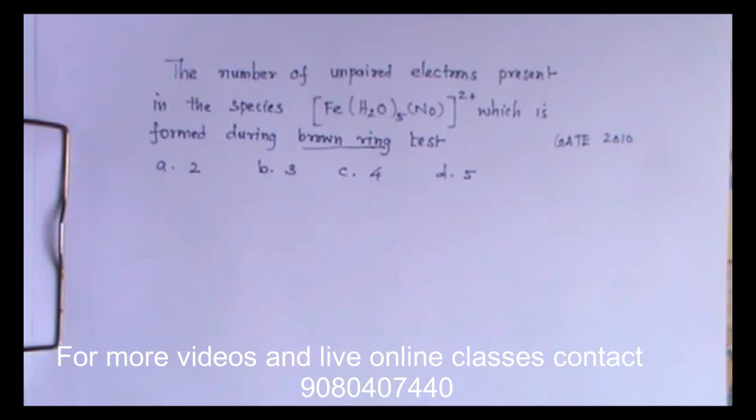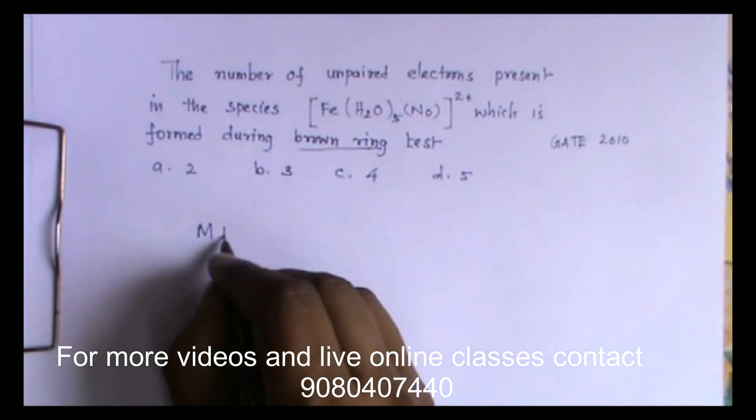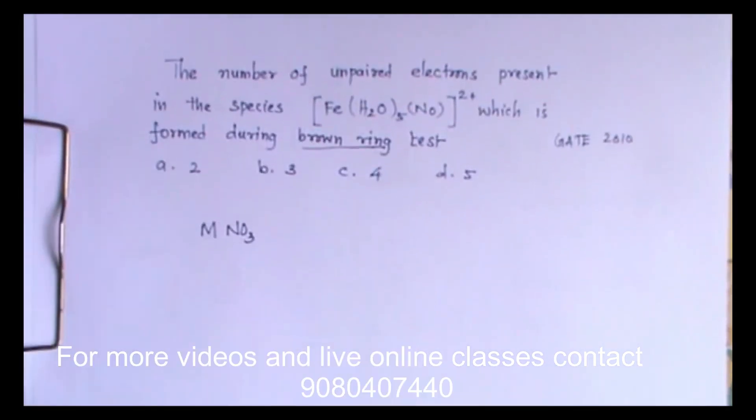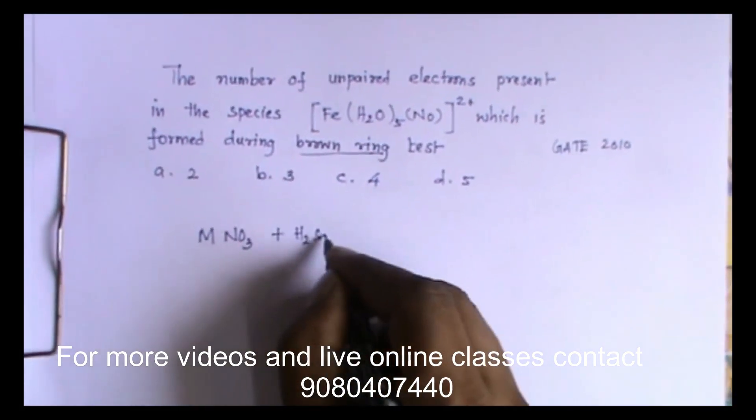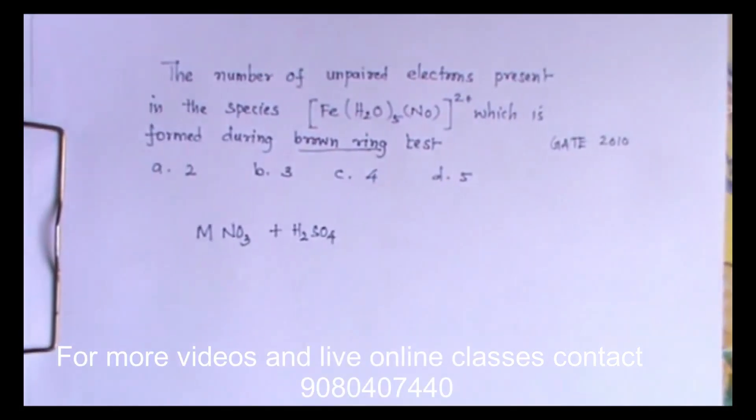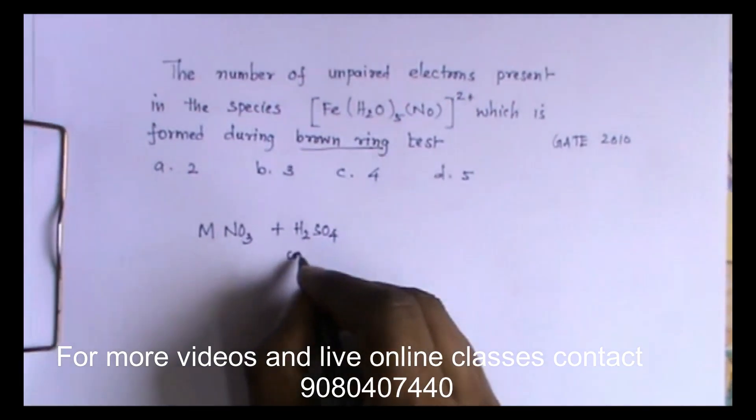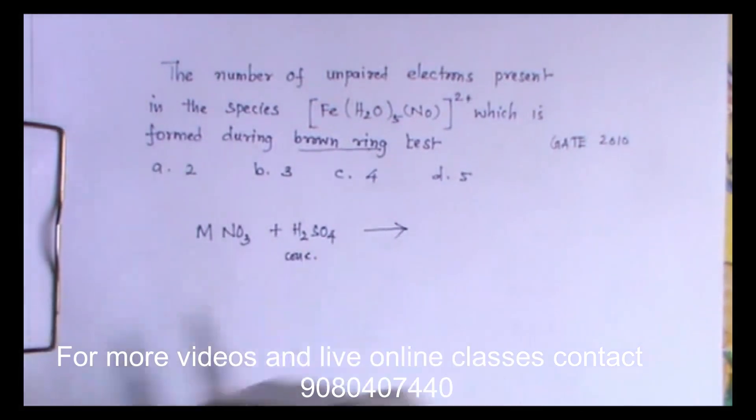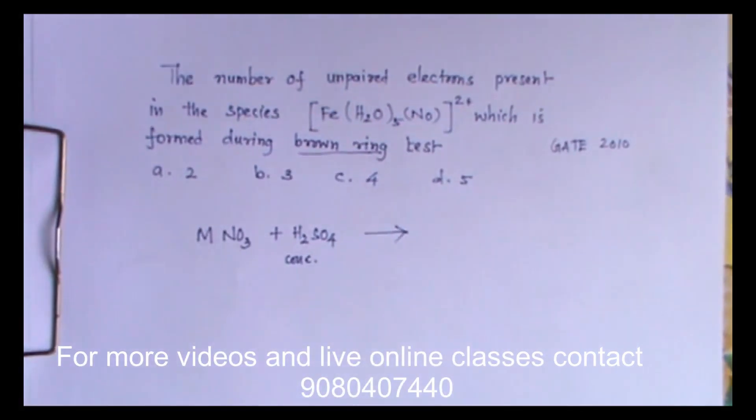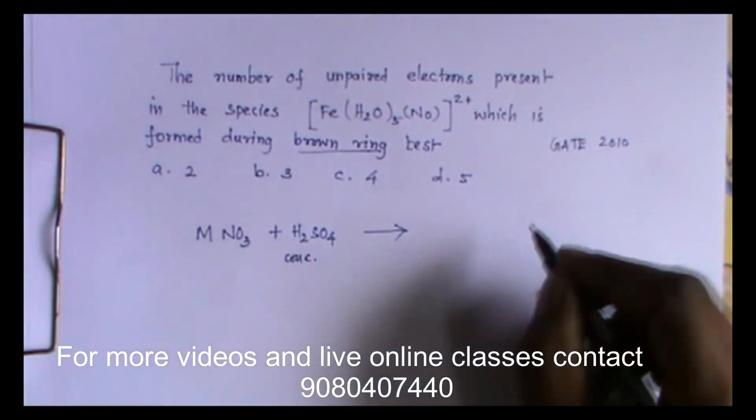For example, say you have one metal nitrate. We add H2SO4 after dissolving this in water. This will be concentrated sulfuric acid. Concentrated sulfuric acid will get settled at the bottom of the test tube. You can find two phases in the test tube.